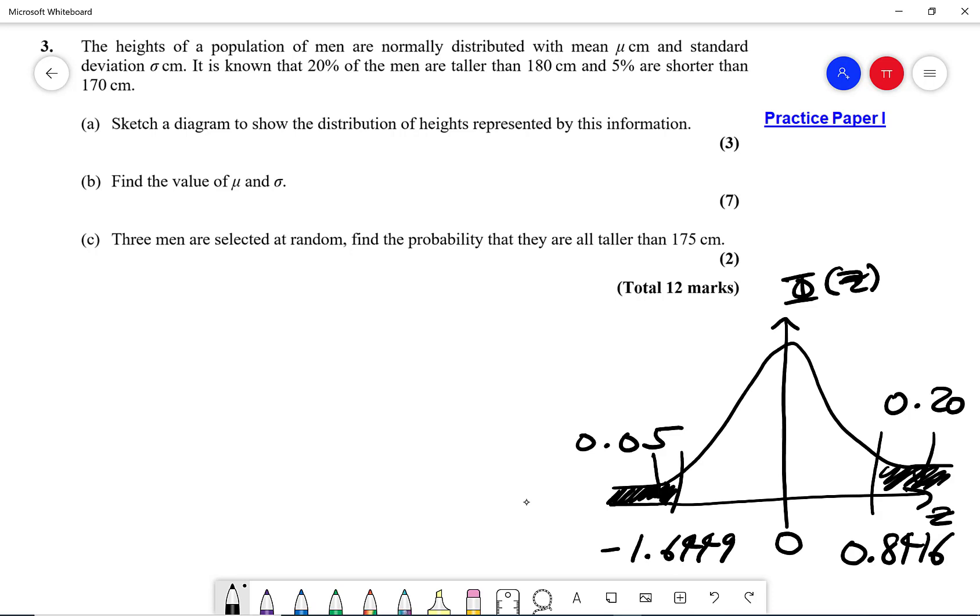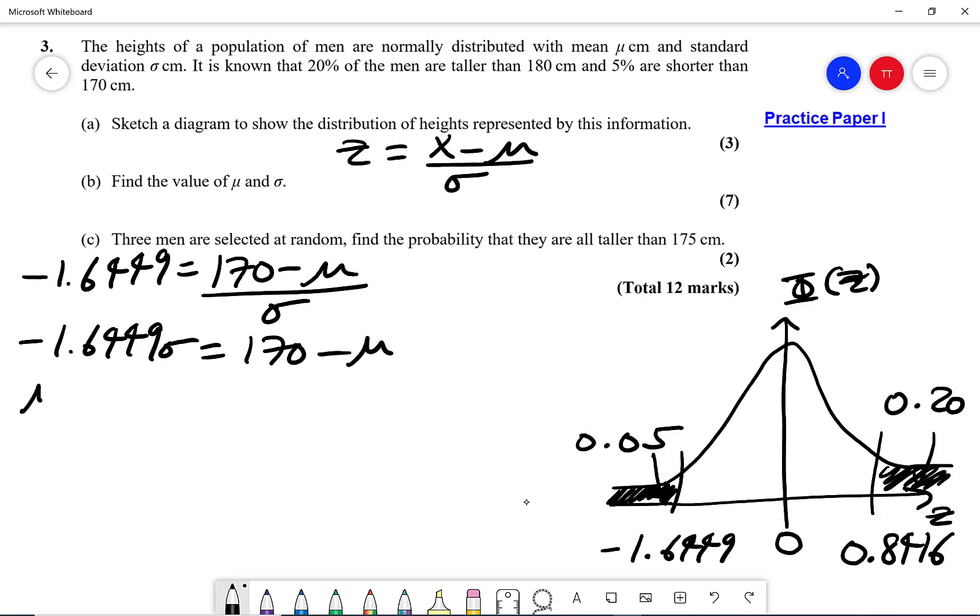Now I'm going to use the formula that z is x minus mu over sigma and I can form some simultaneous equations here. I know my z value which is minus 1.6449. That is equal to, now I know that corresponds to an x value of 170. That's 170 minus the mean divided by sigma. I can form an equation here by saying minus 1.6449 multiplied by sigma is 170 minus mu, and that will give me mu minus 1.6449 sigma equals to 170.